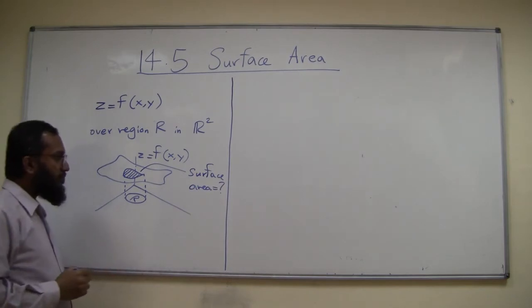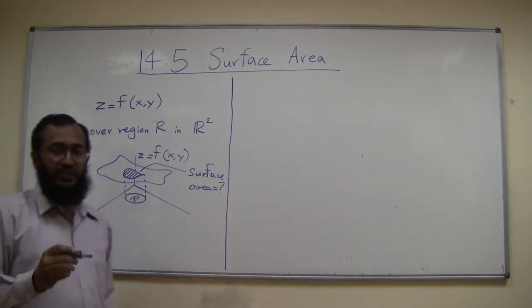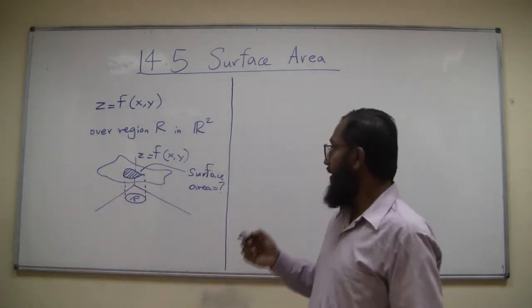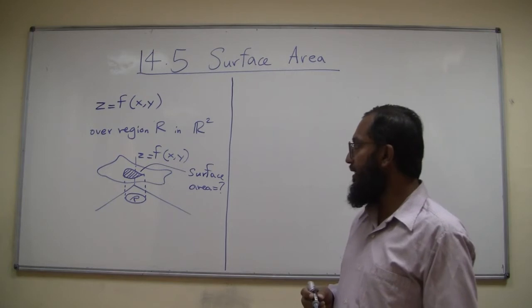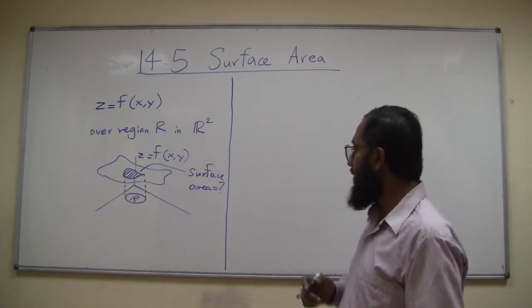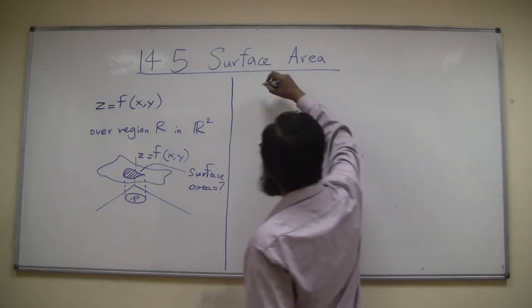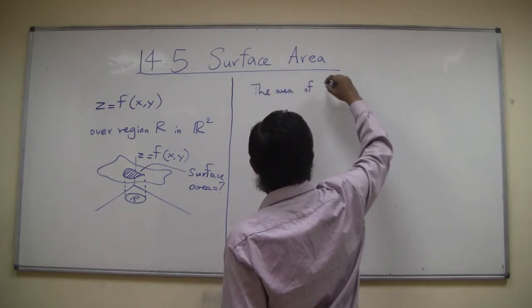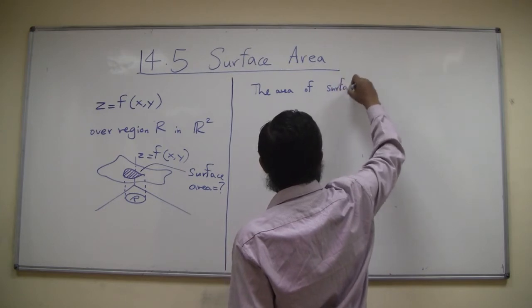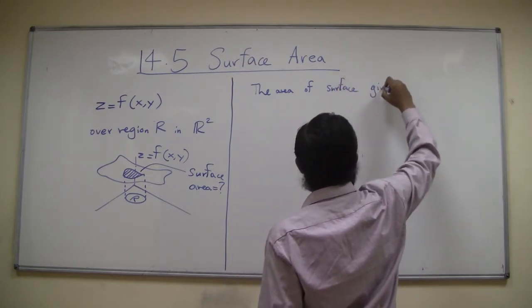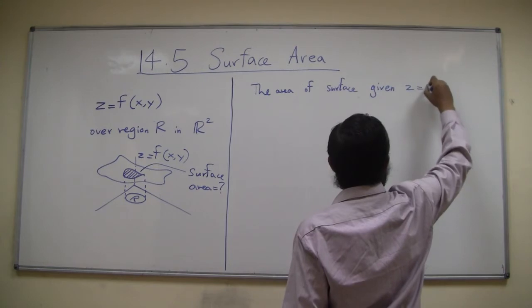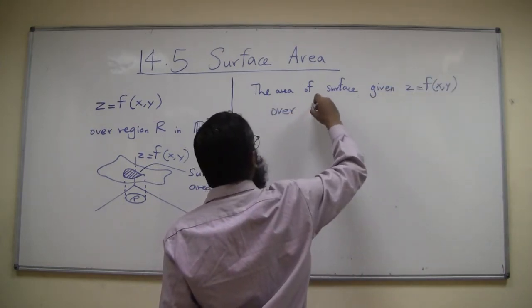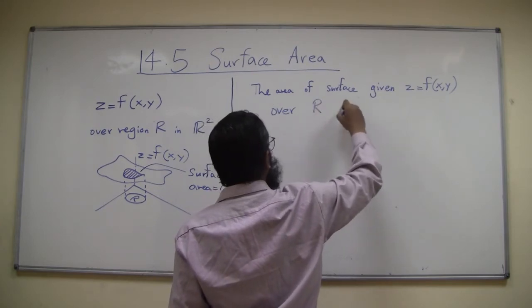Okay, I will first mention how do we calculate it, what's the formula we use, what integral, give you an example, and the next lecture we'll see why that formula works. So to calculate the surface area of surface given by z equal to f(x,y) over R is given by...